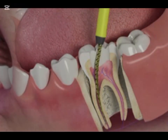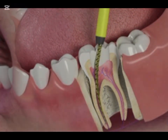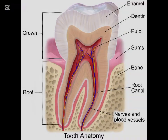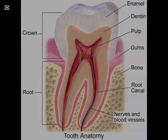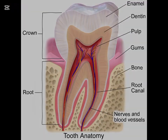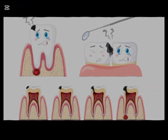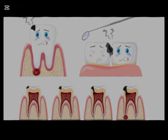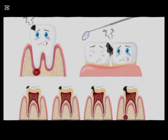Let's look at the structure of a tooth. A tooth isn't just a hard chunk of enamel you see in your mouth — it has multiple layers: enamel, the hard outermost white covering; dentin, a softer layer beneath the enamel; and pulp, the innermost part containing nerves, blood vessels, and connective tissue. The pulp is essential during tooth development, but once a tooth is fully grown, it can survive without it. Now, imagine this pulp gets infected due to bacteria from deep decay or trauma — that's when a root canal becomes necessary.